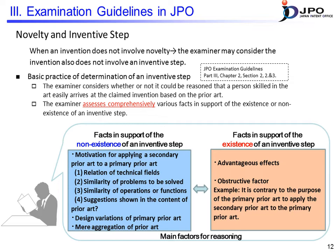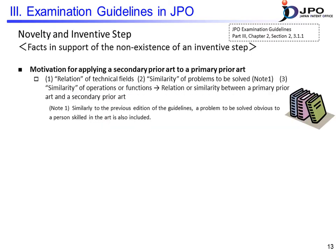An example of an obstructive factor is the case where the application of secondary prior art to the primary prior art is against the purpose of the primary prior art. If the reason for denying inventive step cannot be maintained after consideration of the factors for affirming inventive step, the claimed invention is determined to have an inventive step. On the contrary, if the reason for denying inventive step can be maintained after examining the factors for affirming inventive step, the claimed invention is determined to lack inventive step.